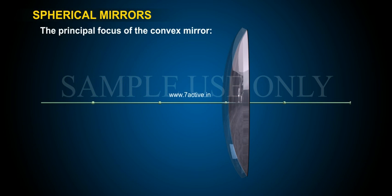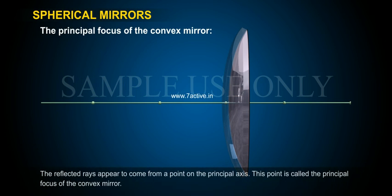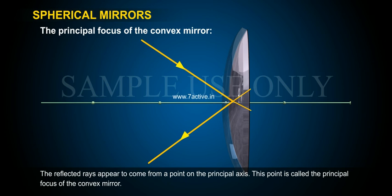The principal focus of the convex mirror. The reflected rays appear to come from a point on the principal axis. This point is called the principal focus of the convex mirror.